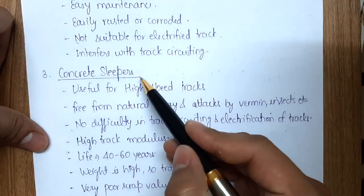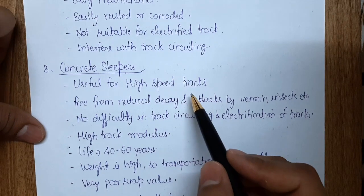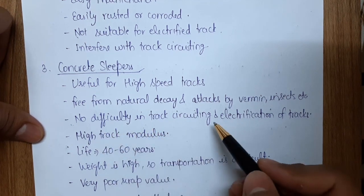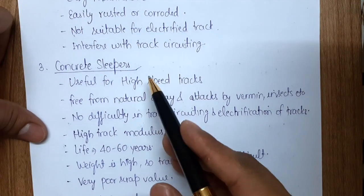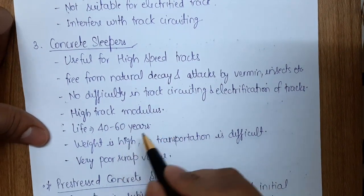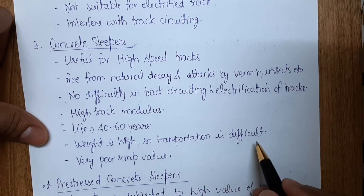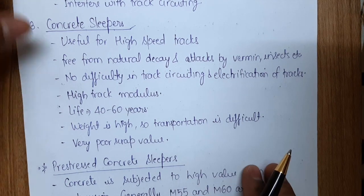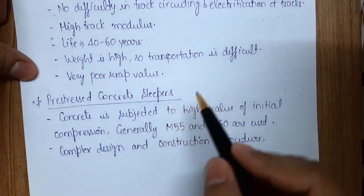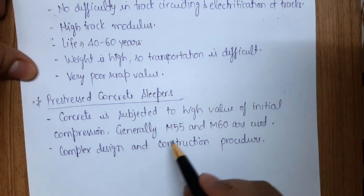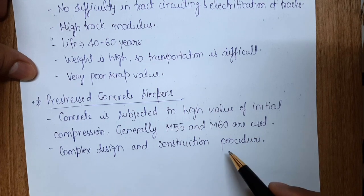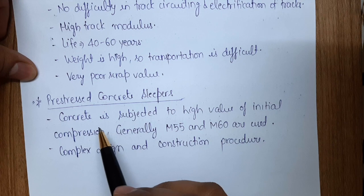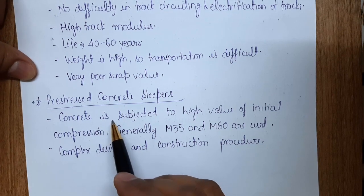Concrete sleepers are used nowadays, particularly for high-speed tracks. They are free from natural decay and attacks by insects. There is no difficulty with track circuiting or electrification as concrete is not a conductor of electricity — it acts as an insulator. They have high track modulus and a lifespan of 40 to 60 years. Disadvantages include high weight (making transportation difficult) and poor scrap value. Pre-stressed concrete sleepers came next, using high initial compression (generally M55 and M60 grade), with complex design and construction procedures.